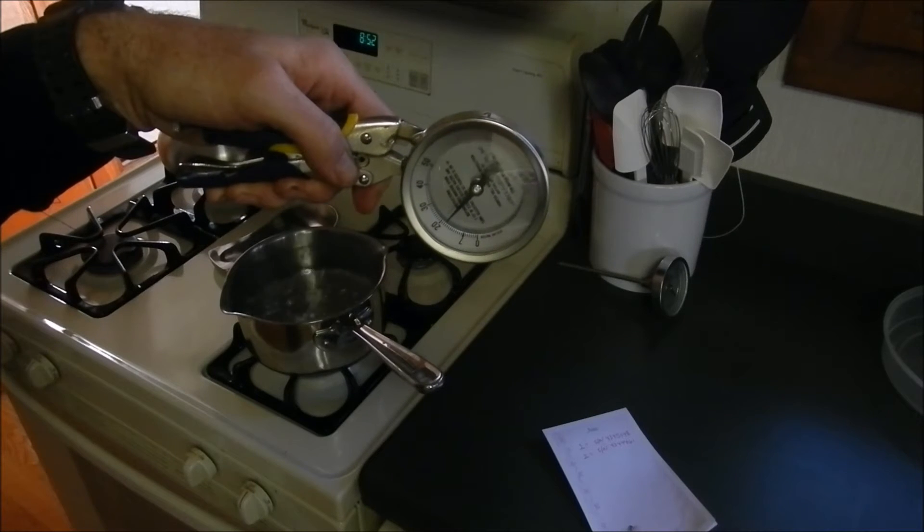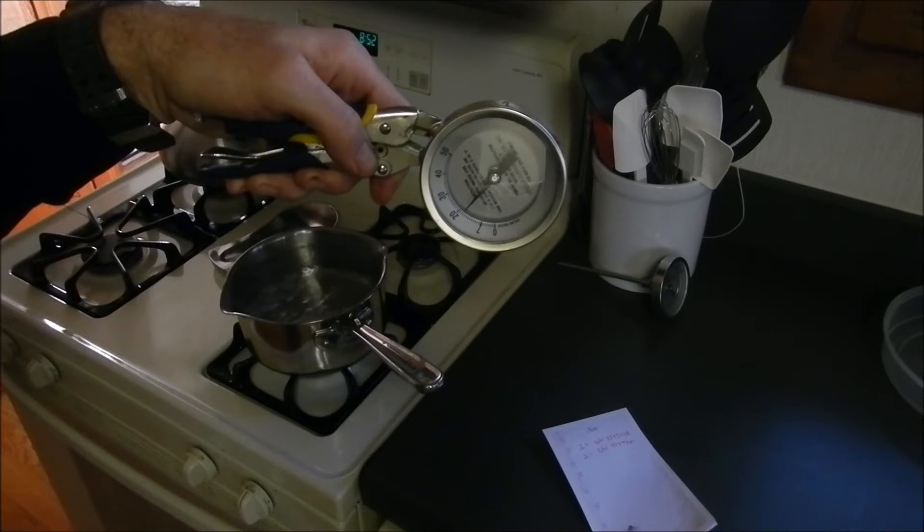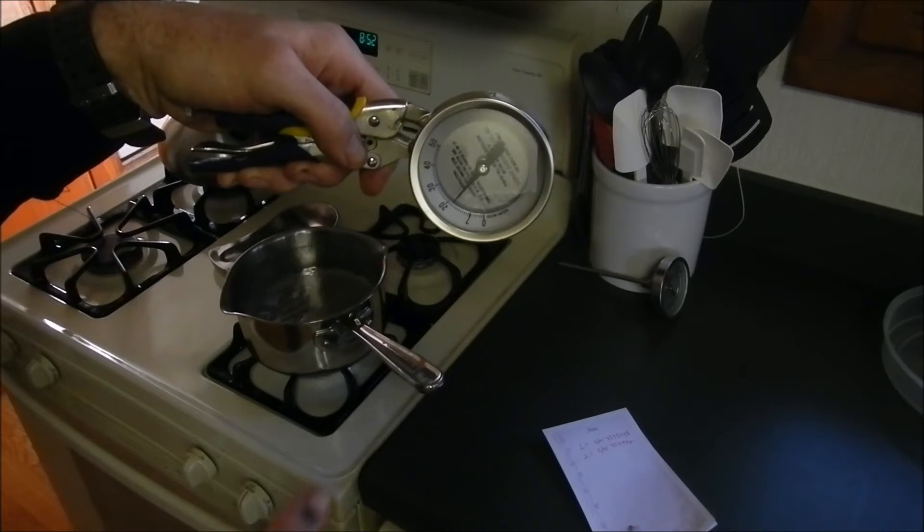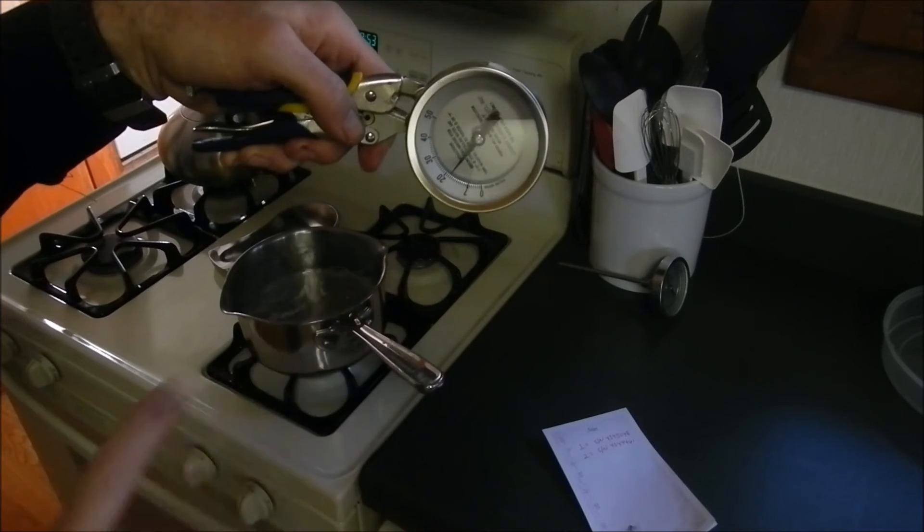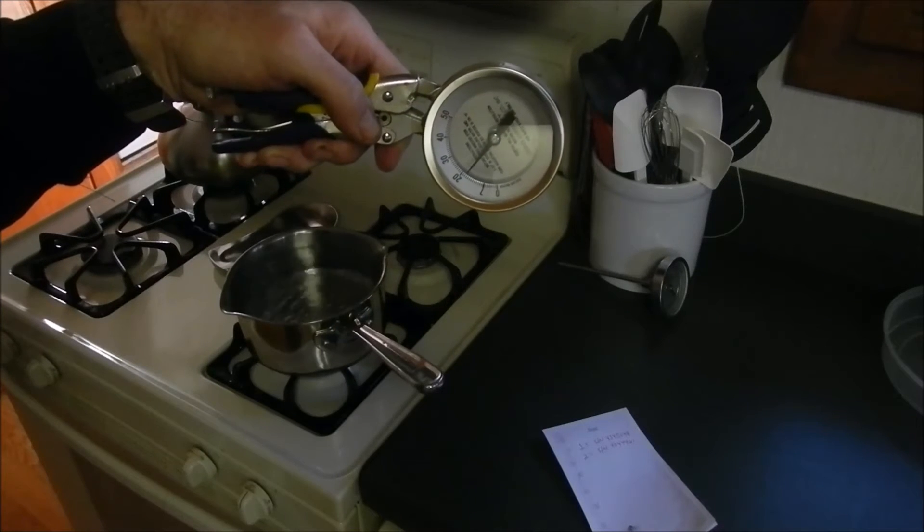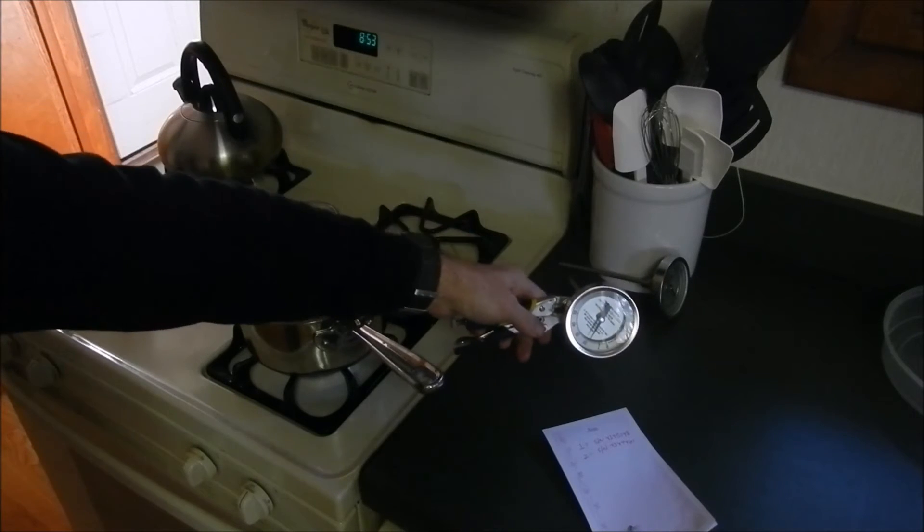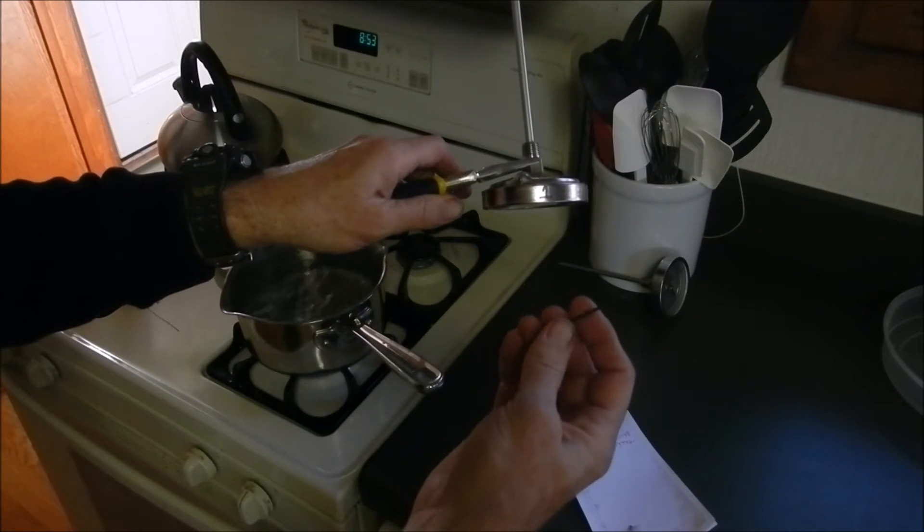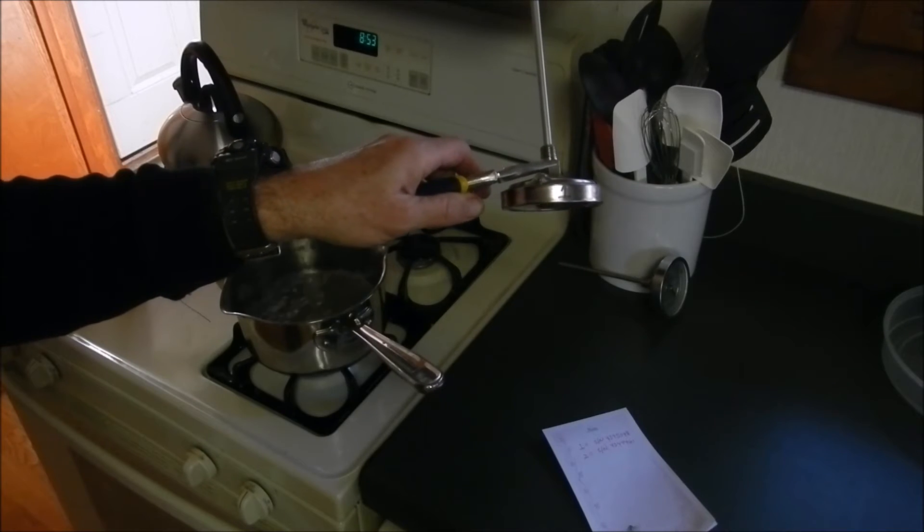At our altitude of roughly 680 feet above sea level, we're within a couple tenths of 212 for the boiling point of water. So zero would be the boiling point of water. Seven would be the boiling point of syrup at a brix of 66, or 66% sugar concentration. And then provided is an Allen key that makes the adjustment right here on the thermometer.